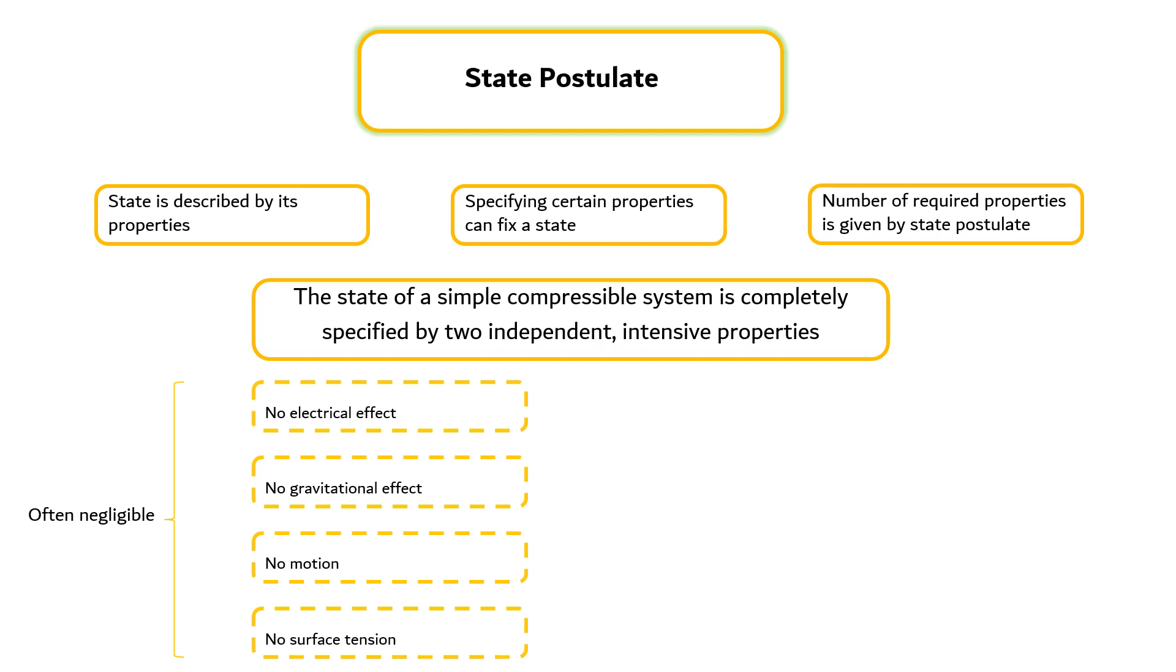Otherwise, an additional property needs to be specified for each effect that is significant. For example, if the gravitational effects are to be considered, the elevation z needs to be specified in addition to the two properties necessary to fix the state.